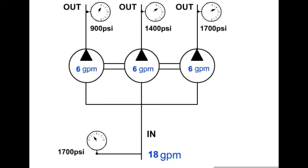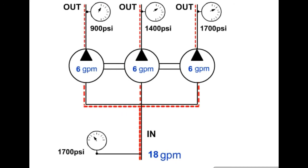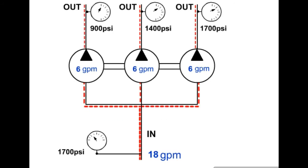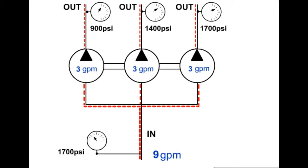The gear-type proportional divider can divide the flow into two or more flow paths. The positive displacement of the gear sections produces a constant division of the flow, even if the loads and pressures in the output circuits vary. The output flows are proportional to the input; as the input varies, the output flows will vary proportionally.